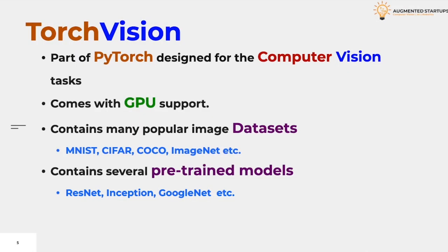Another important library that comes with PyTorch is TorchVision. It is specially designed for computer vision problems related to machine learning with the assistance of PyTorch. Since it is part of PyTorch, it already has GPU support. It also contains several image datasets, including MNIST, CIFAR, COCO, and many other important datasets that can be used to train machine learning models. It also contains several pre-trained models, including ResNet, Inception, GoogleNet, etc., which can be used to further train on the built-in or custom datasets.